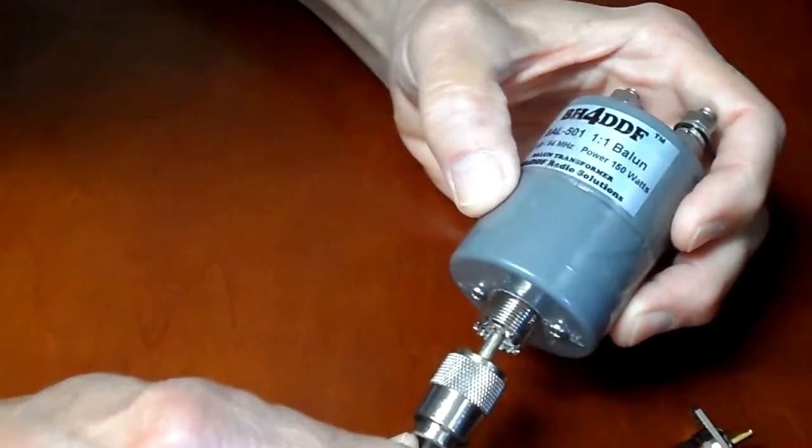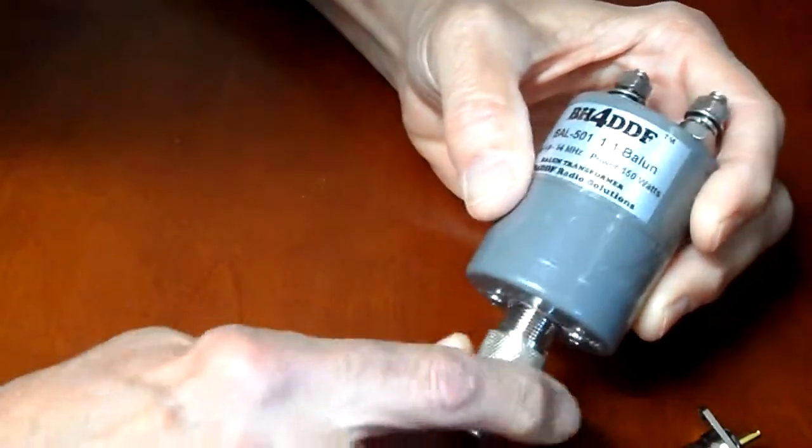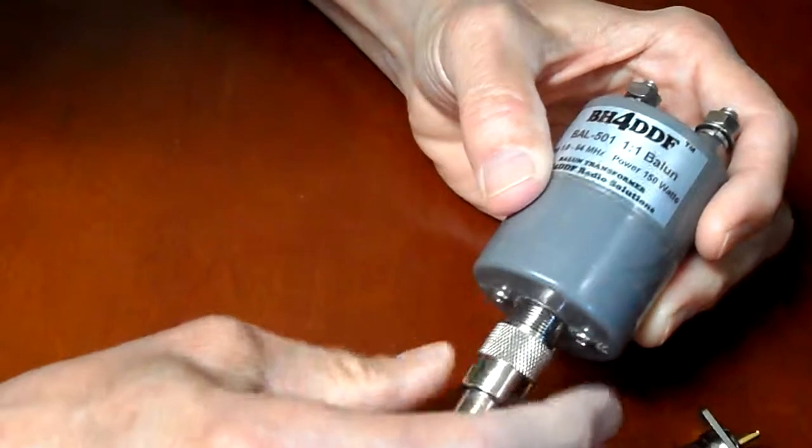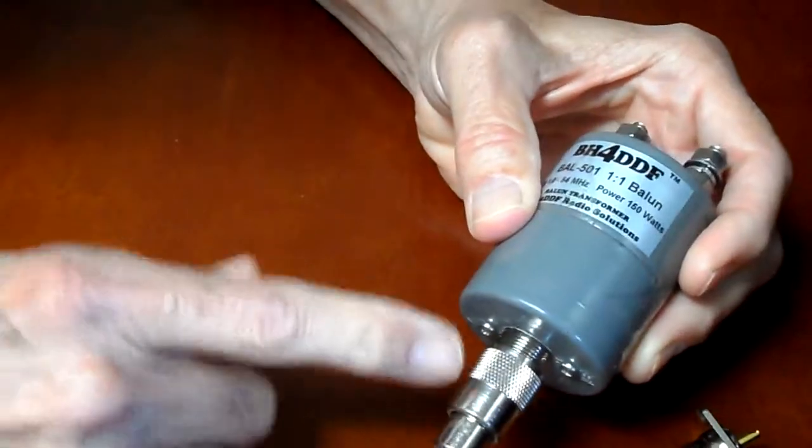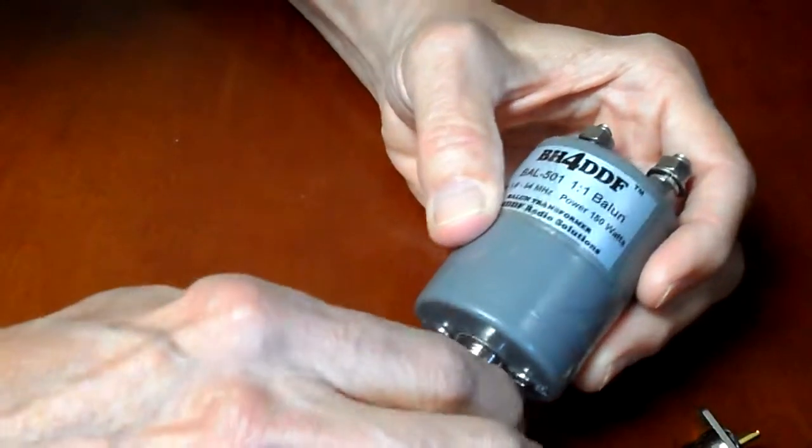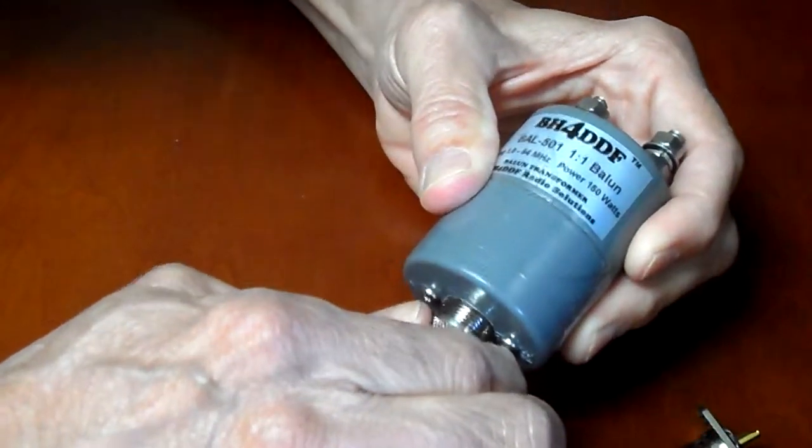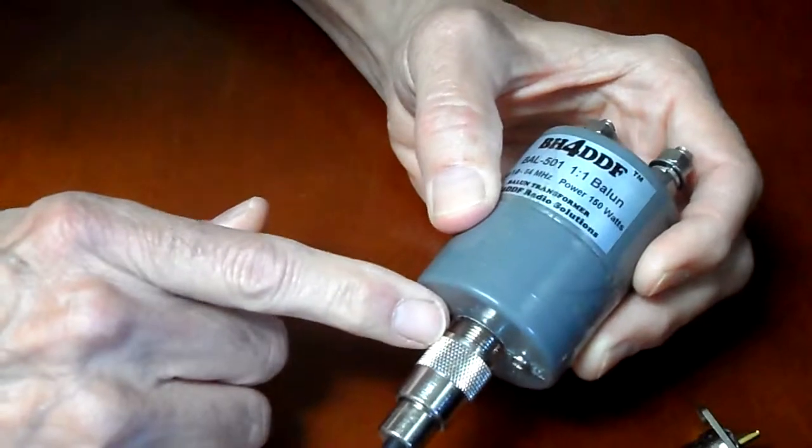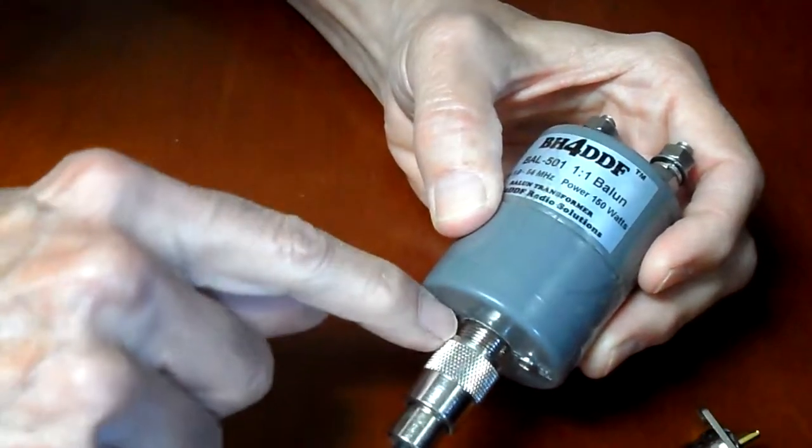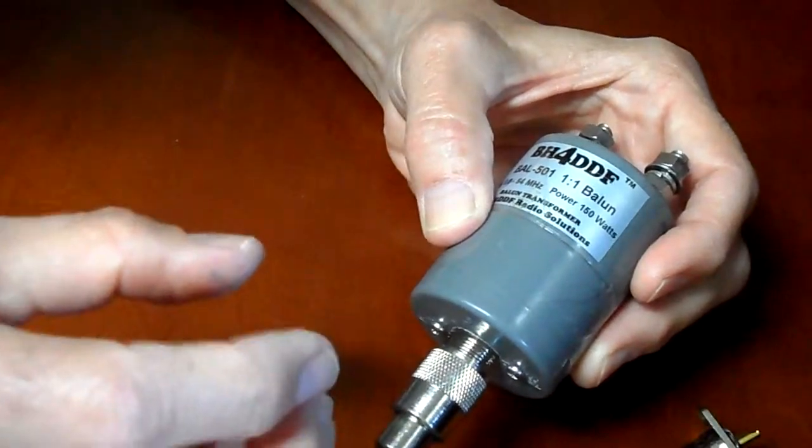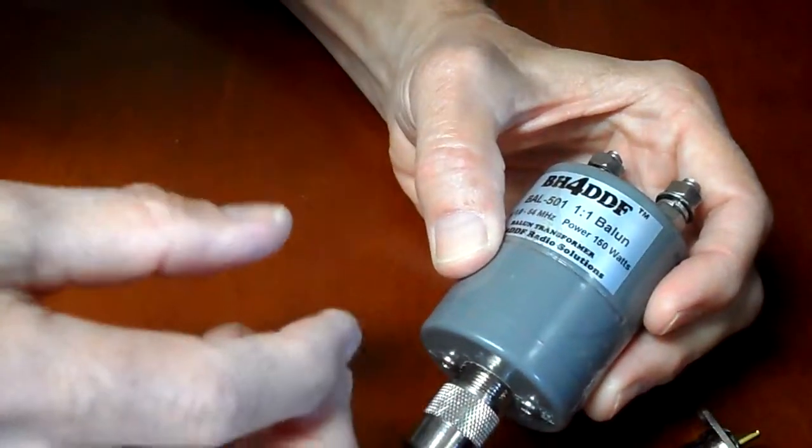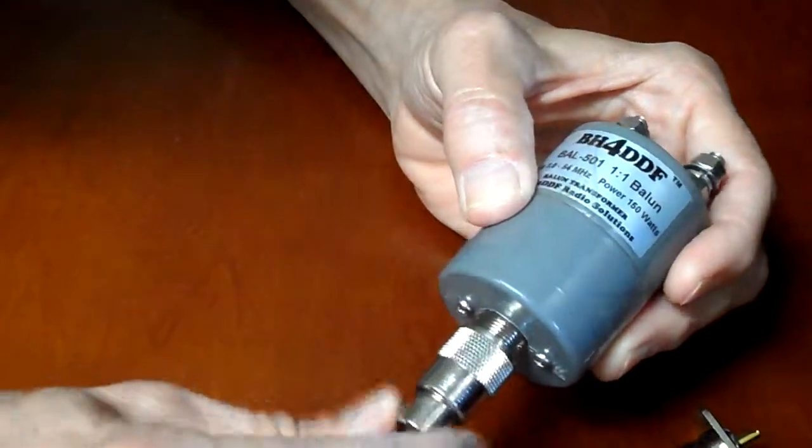but now watch what happens when I take this connector, make a good solid connection there, and I go to thread it on. At some point here, I can't move this anymore. I can grab, I can take pliers and can't hardly, and barely make a little tiny bit more. Can't really turn it any more than that. And right currently, the threads in here are bound because there are a different thread count, and they're tightly bound.